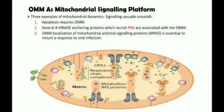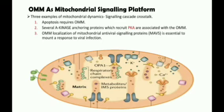The role of mitochondria in apoptosis was identified when the anti-apoptotic protein BCL2 was found associated with the outer mitochondrial membrane. BCL2 controls outer mitochondrial membrane permeabilization, which is accompanied by mitochondrial fragmentation and cytochrome C release. As another example, several A-kinase anchoring proteins, which recruit cyclic AMP-dependent serine/threonine-specific protein kinase A, are associated with the outer mitochondrial membrane, regulating cyclic AMP signaling in time and space. Finally, outer mitochondrial membrane localization of mitochondrial antiviral signaling proteins is essential to mount a response to viral infection.